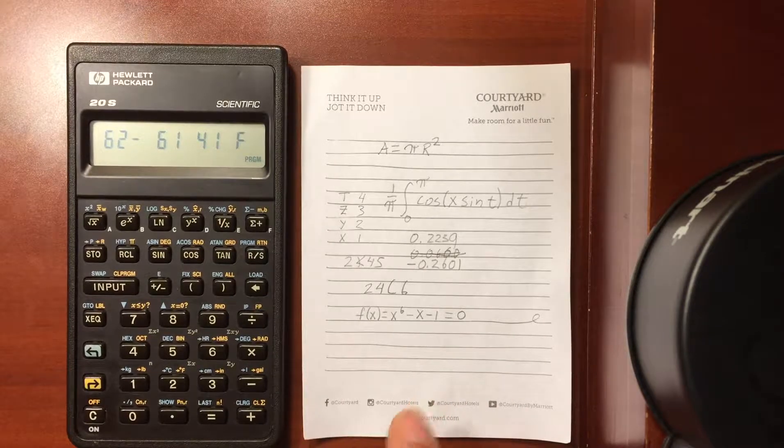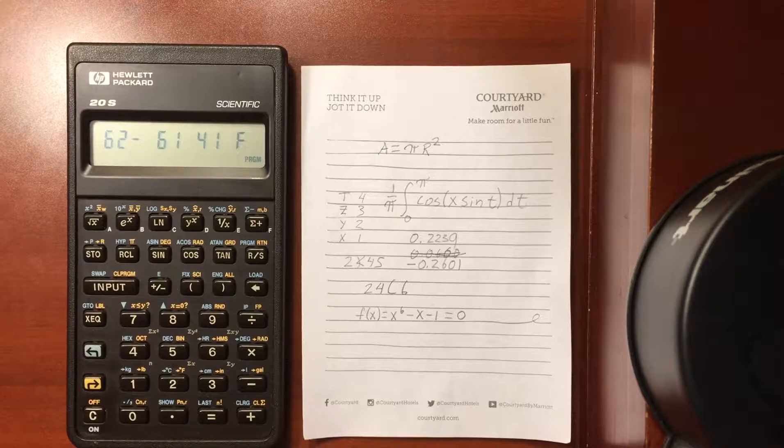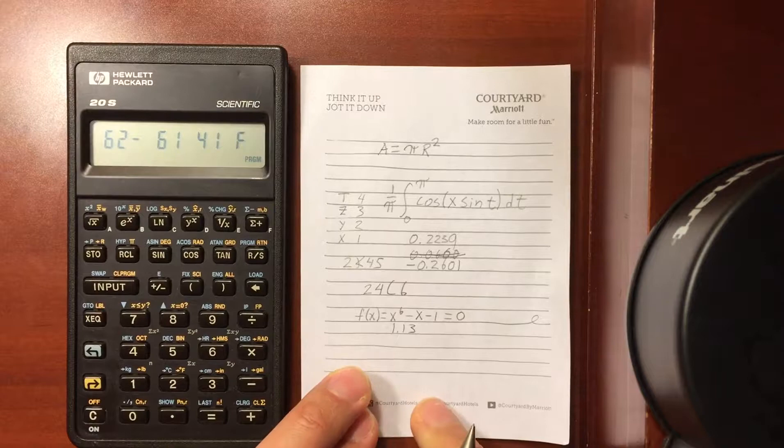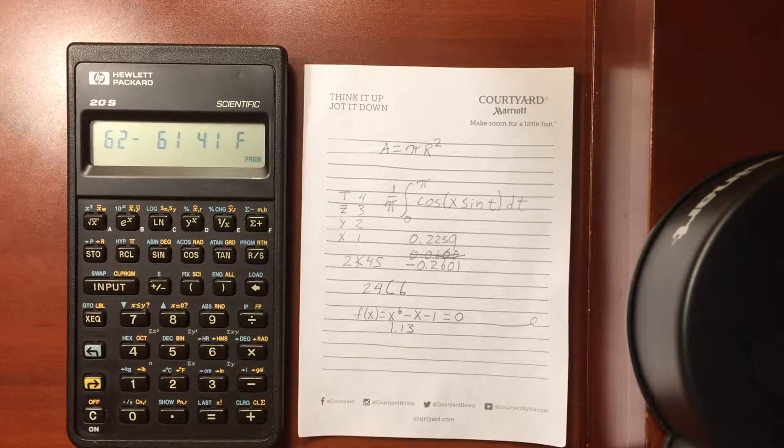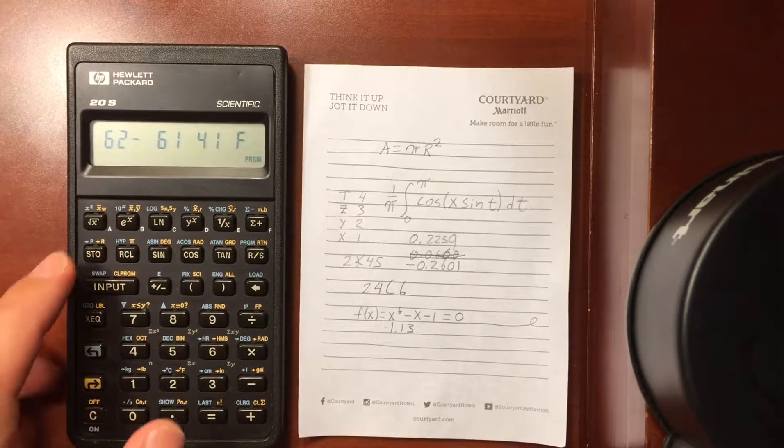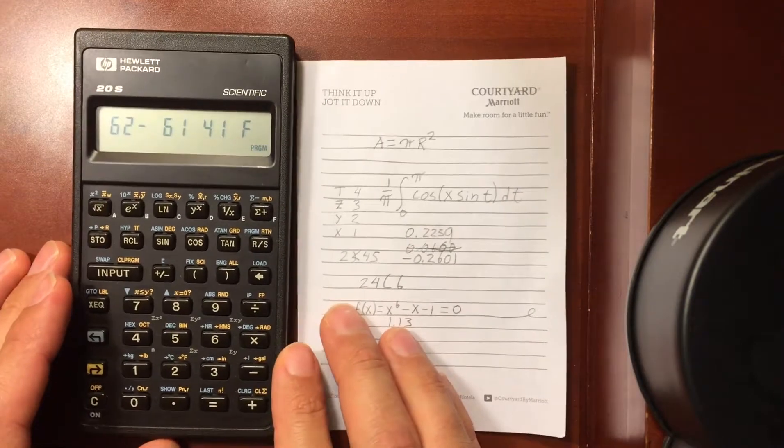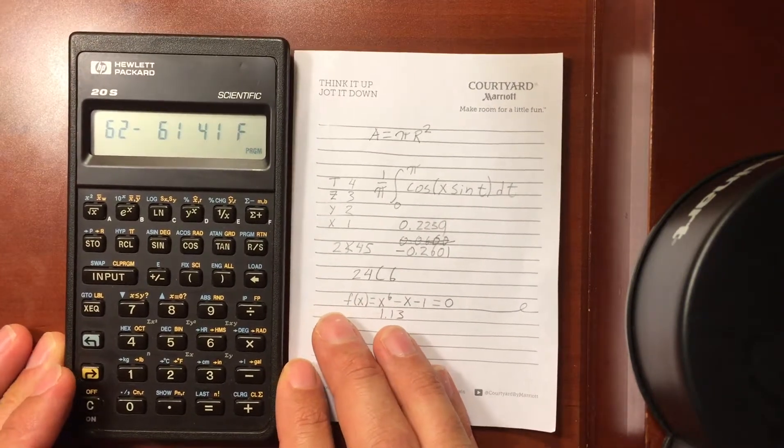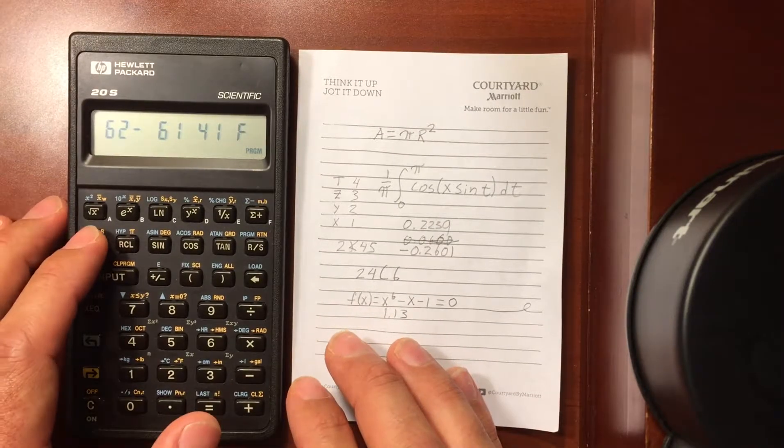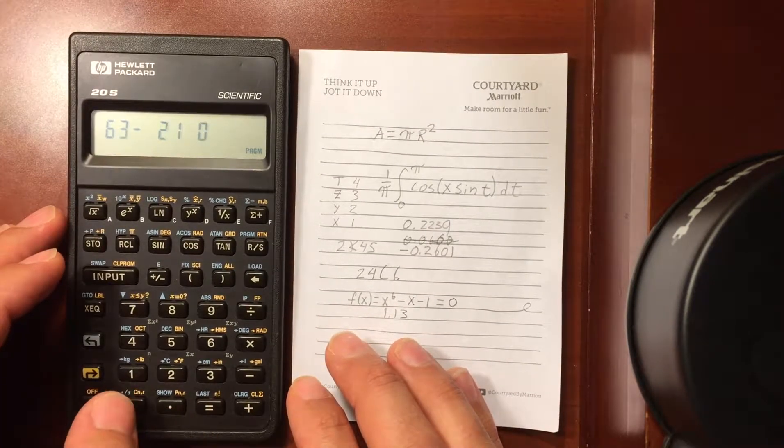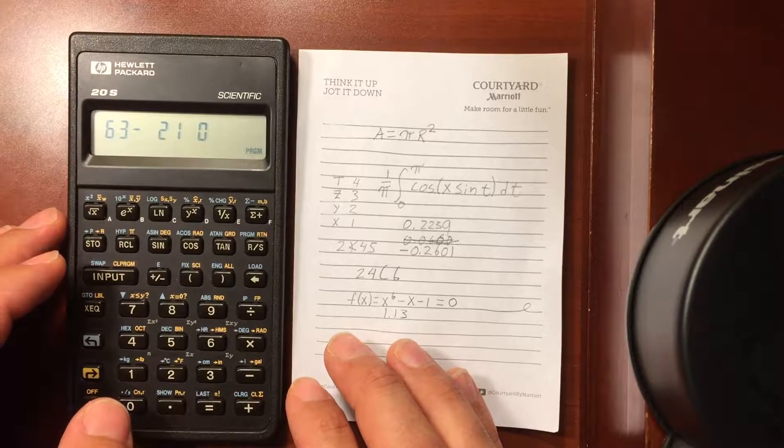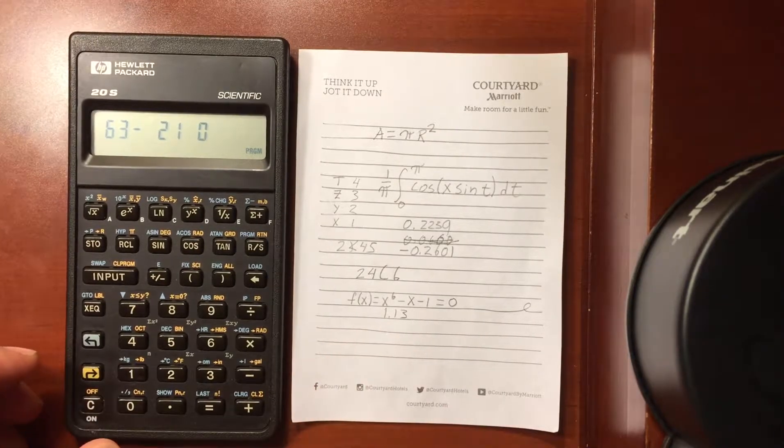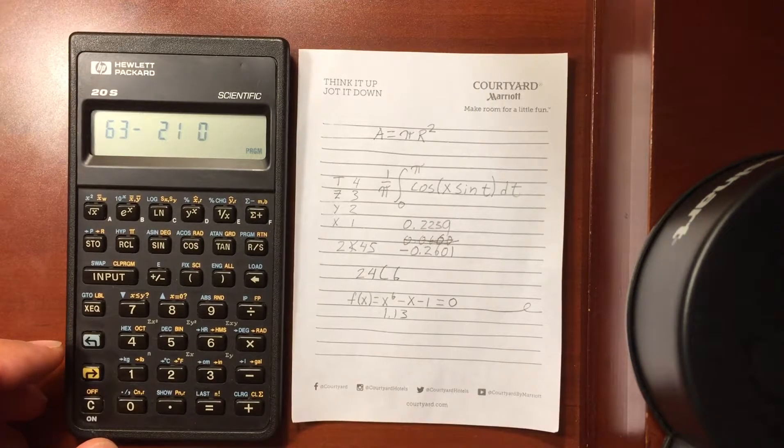What we're going to do first is store the value that we have in the register. So we're going to put a number into our calculator and then store it. I'm going to store in zero. Then I'm going to take that number that's already in the register and put it to the sixth power.